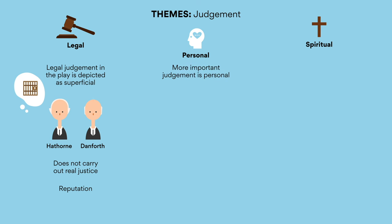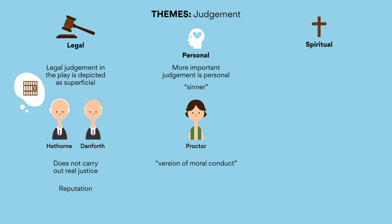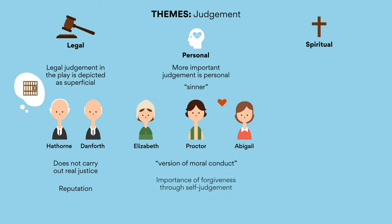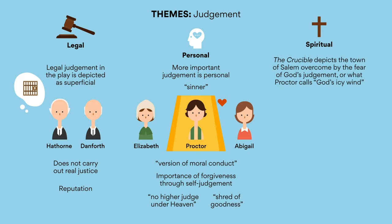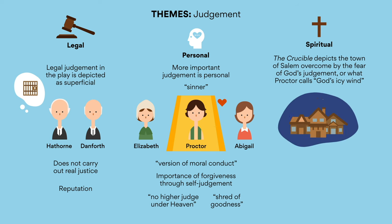Miller suggests that the more important judgment is personal, as exemplified by the character of Proctor. Believing himself to be a sinner against his own version of moral conduct, Proctor throughout the play shows limitless remorse and self-hatred for the hurt he has caused Elizabeth by his affair with Abigail. Miller shows the importance of forgiveness through self-judgment, as Elizabeth assures Proctor that there is no higher judge under heaven than Proctor himself, and he is ultimately able to forgive himself and see the shred of goodness within him by the end of the play. Furthermore, The Crucible depicts the town of Salem overcome by the fear of God's judgment, or what Proctor calls God's icy wind.